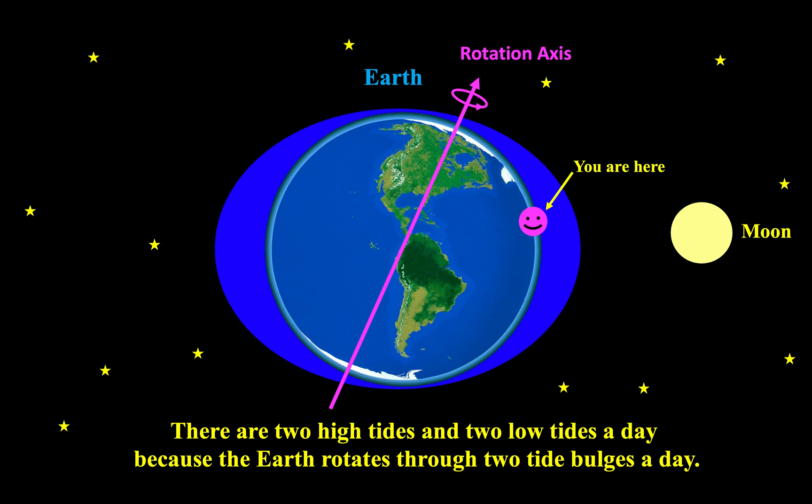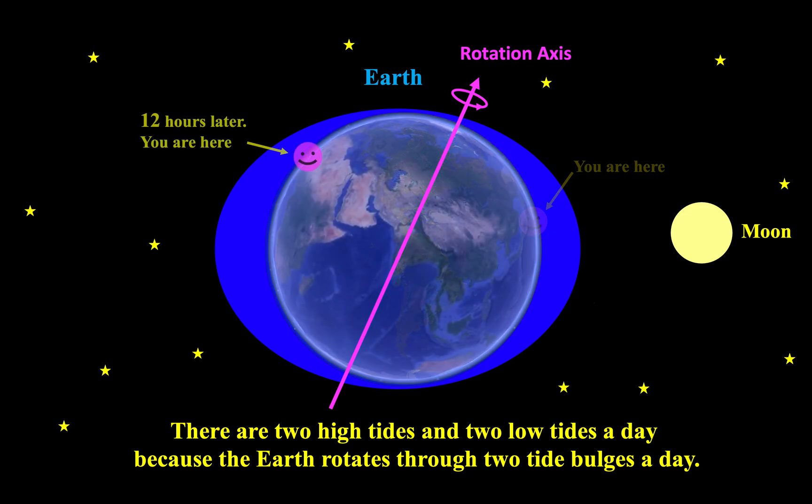The Earth also rotates around its own axis. It takes about 12 hours for the Earth to rotate you from one tidal bulge to the other tidal bulge on the opposite side. There are 24 hours a day. Therefore, every place on Earth has two high tides and two low tides a day.